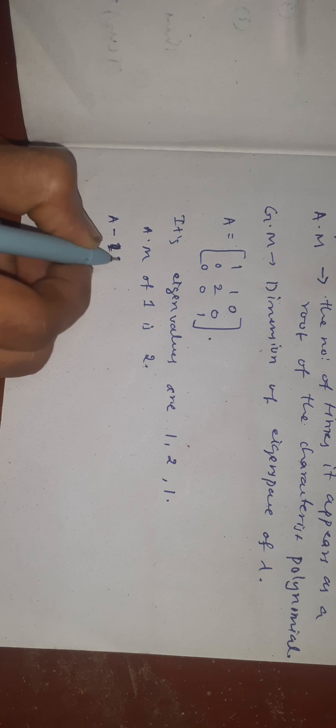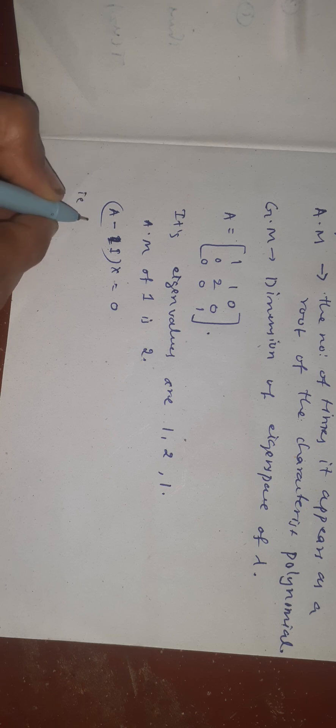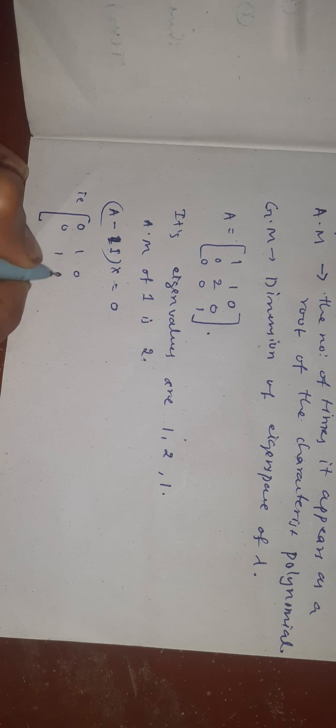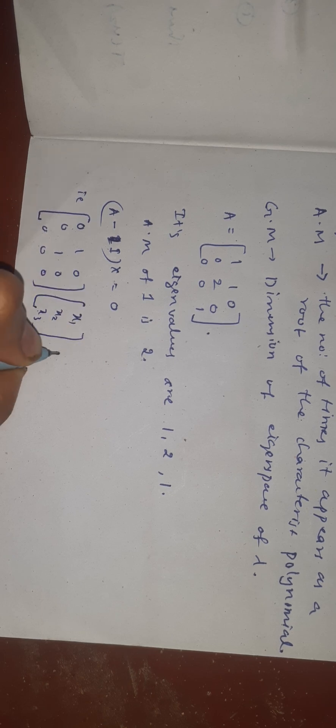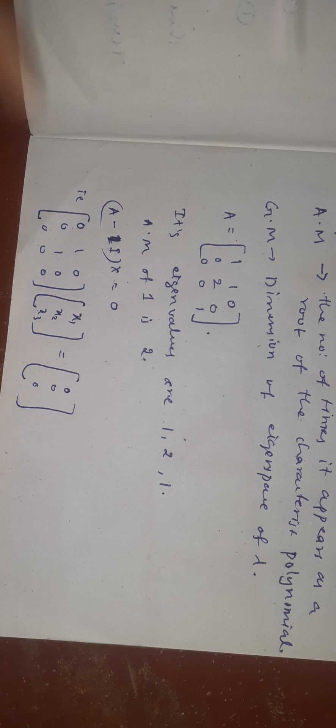Consider (A − I)x = 0, where λ = 1. So A − I gives the matrix 0, 1, 0, 0, 1, 0, 0, 0, 0 multiplied by x = [x1, x2, x3]ᵀ = [0, 0, 0]ᵀ. Applying elementary row transformation R2 → R1 − R2, we get the row reduced matrix 0, 1, 0, 0, 0, 0, 0, 0, 0.